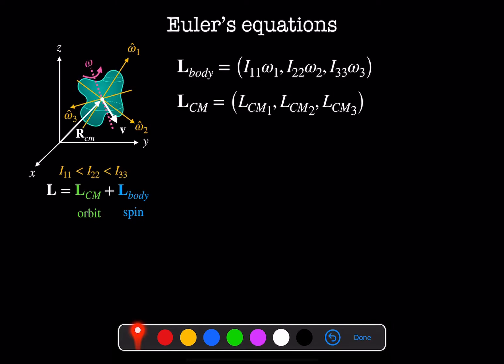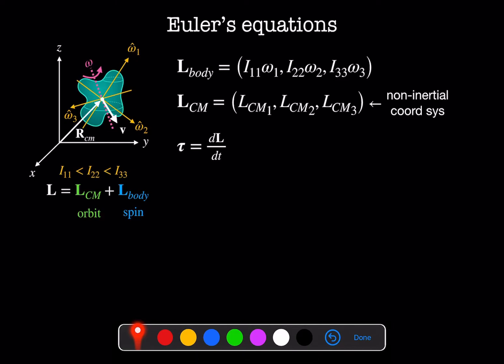Likewise, the angular momentum of the center of mass can be expressed in this new basis. However, this isn't an inertial coordinate system, so we'll need to deal with that when we work out what the torques on our system are. The torque is just the rate of change of angular momentum, which is dL_cm/dt plus dL_body/dt. The second term is the same as it would be in the regular coordinate system since the center of mass lies at the origin of these principal axes.